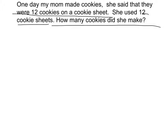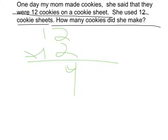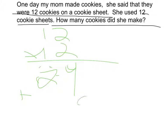What we're going to do now is 12 times 12. 2 times 2 is 4. 2 times 1 is 2, plus 0. 2 times 1 is 2, and 1 times 1 is 1. Now that's it. Our answer is 144.